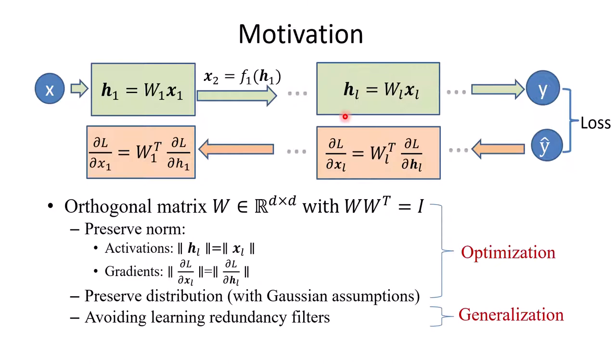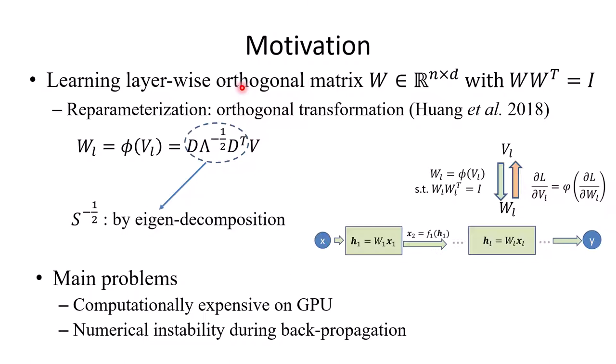The main difficulty in training DNNs is the vanishing and exploding gradient problems. This problem mainly arises from the linear transformations that are controlled by the weight matrices, which affects the forward and backward process. One effective idea is using orthogonal weight matrices that have advantages in preserving the norm and distribution of the activations and gradients, thus can benefit optimization. Besides, it can avoid learning redundancy filters that benefit generalization.